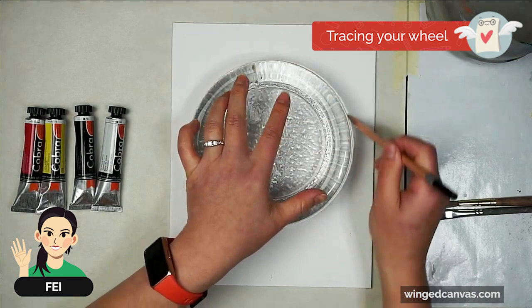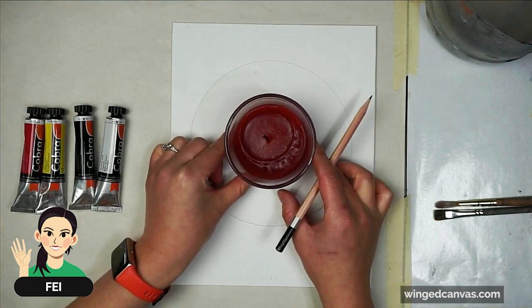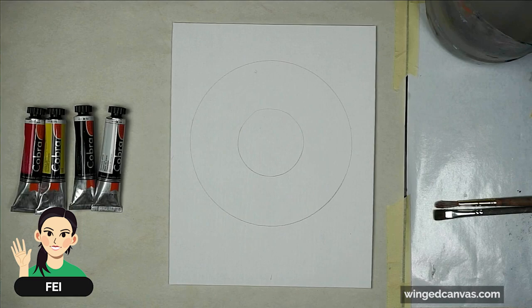I'm going to trace a small circle and a large circle to get my color wheel started. You can use whatever you want to trace this circle. I'm going to use my ruler to divide it into 12 equal parts.